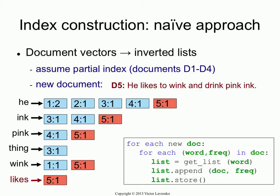Suppose you're clever and you're storing everything on disk. Think about what you're doing: for each word that comes in, you're fetching an inverted list from disk, appending a single entry to it, and then writing it back to disk. That is really, really wasteful — you're reading a large amount of data from disk, appending one number, and dumping it all back. This is very, very inefficient. If your dataset is small enough to fit in memory, great. But with a realistic dataset, this won't work.